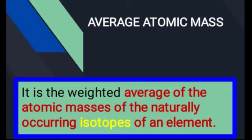اس کا مطلب کیا ہوا کہ کسی element میں پائے جانے والے atoms کا جو average weight ہوگا وہ average atomic mass ہوگا۔ لیکن یہاں یہ چیز clear کرنی ہے کہ اگر کسی element میں پائے جانے والے atoms similar ہوتے ہیں تو پھر isotope کی term کیوں use کی گئی؟ اس کا مطلب یہ ہوا کہ naturally کچھ elements ایسے ہیں جن میں پائے جانے والے سارے atoms similar نہیں ہوتے۔ اس کے لیے دیکھتے ہیں کہ isotopes کسے کہتے ہیں۔